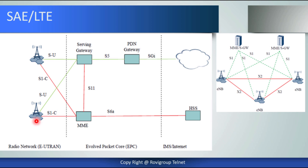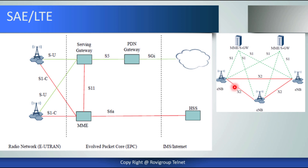The Evolved U-TRAN consists of eNodeBs providing the Evolved U-TRAN user plane and control plane terminations towards the UE. The eNodeBs are interconnected with each other by means of the X2 interface. It is assumed that there always exists an X2 interface between eNodeBs that need to communicate. In case there is a problem with the X2 interface, then the eNodeBs will communicate through the S1 interface.